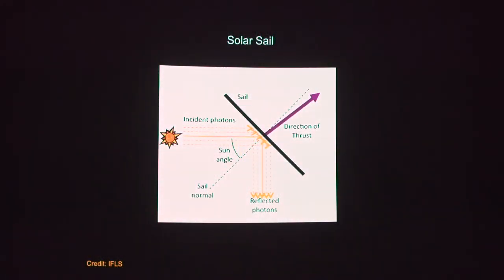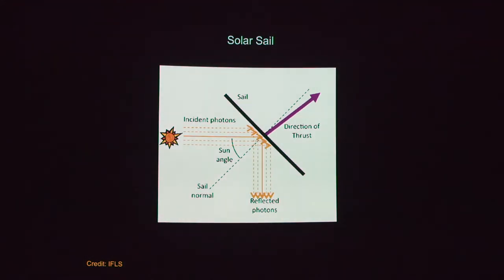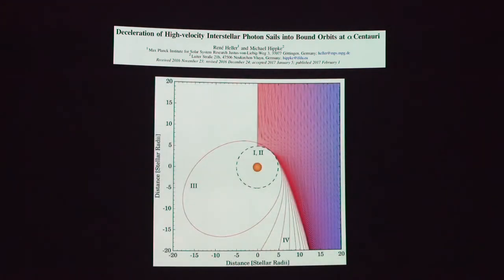But the idea behind the solar sail is that the light from the sun, or from the laser, and depending on how you angle the sail, you can actually get a thrust in a particular direction. And so a couple of authors just had their paper published about how you can use light from, in this case, Alpha Centauri to actually slow down your solar sail spacecraft.